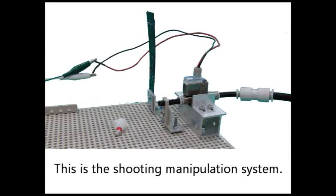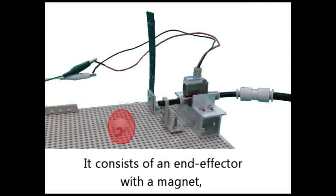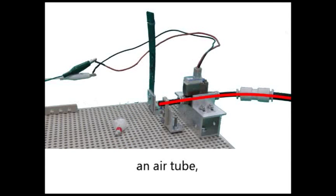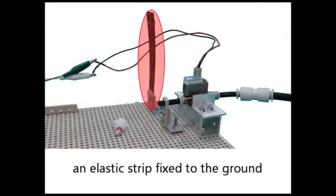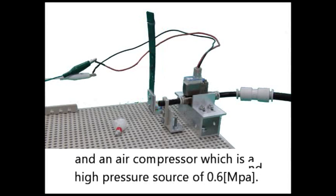This is a shooting manipulation system. It consists of an end effector with magnet, an air tube, a solenoid valve, a string, an elastic strip fixed to the ground, and an air compressor which is a high pressure source of 0.6 MPa.